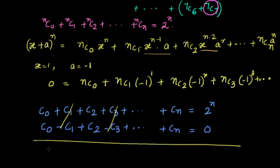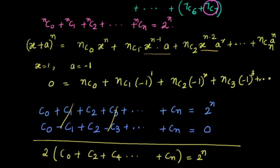When you add this equation to the earlier one (where everything summed to 2^N), the odd terms C1, C3 all cancel. You are left with 2 into (C0 plus C2 plus C4 up to Cn) equals 2^N. Therefore C0 plus C2 plus C4 equals 2^N divided by 2, which is 2^(N-1). Similarly, C1 plus C3 plus C5 up to C(N-1) also equals 2^(N-1).